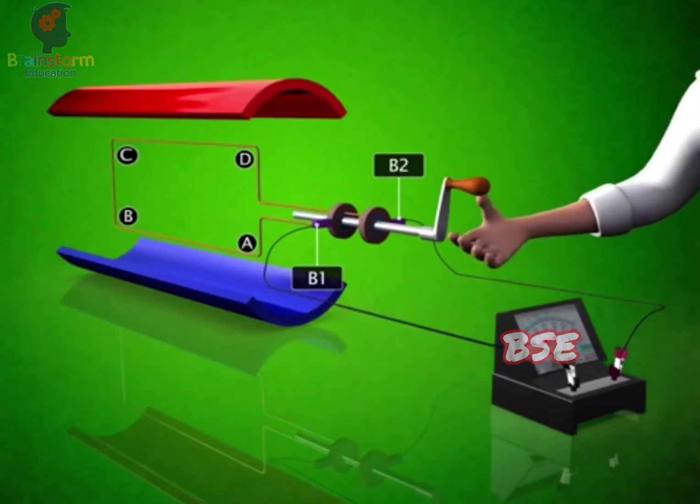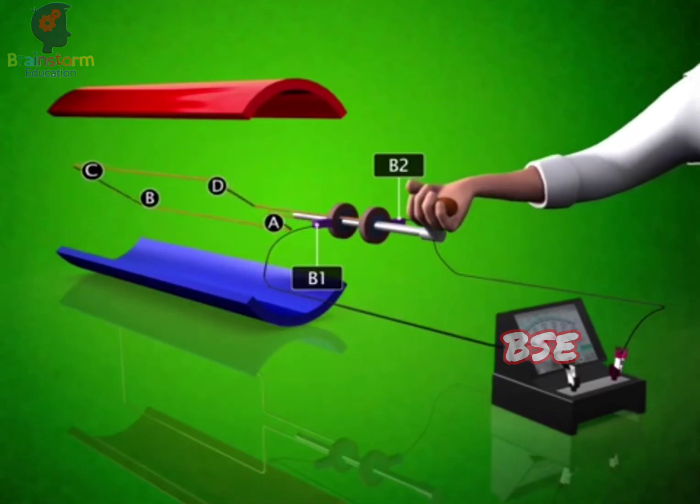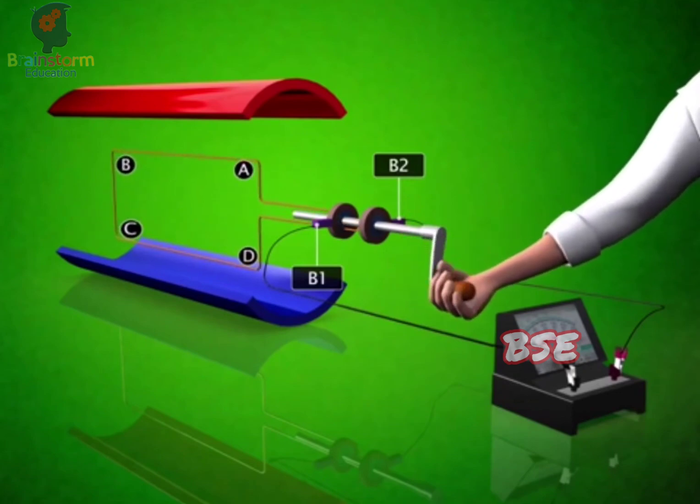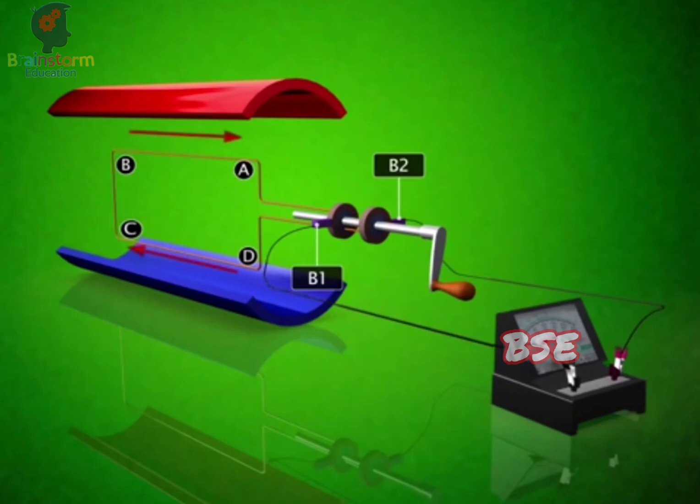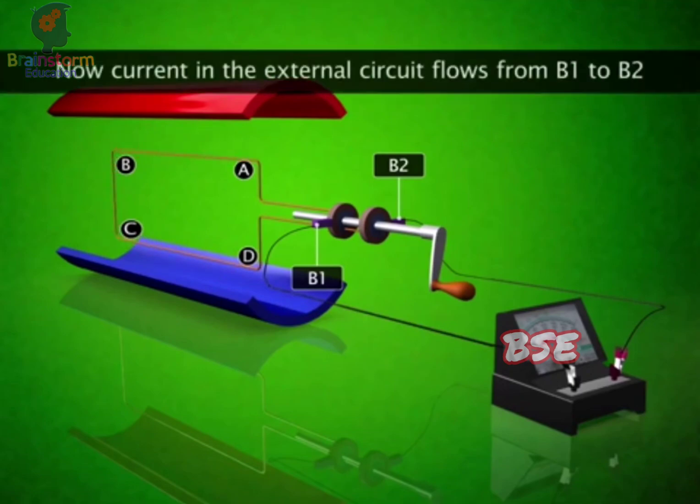After half a rotation, arm CD starts moving up and AB moving down. The induced current now flows in the direction DCBA. The current in the external circuit now flows from B1 to B2.